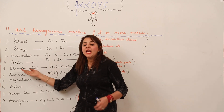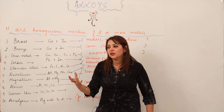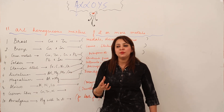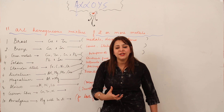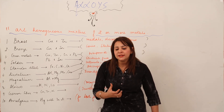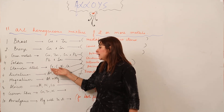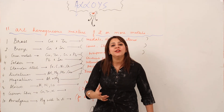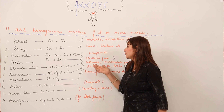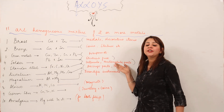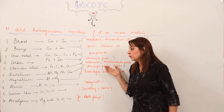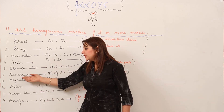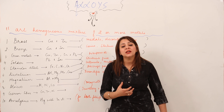Stainless steel is familiar to all of us because most kitchen utensils are made of it. In stainless steel, iron is mixed with carbon along with nickel and chromium. This makes the iron corrosion-free, which is why it is used in making utensils and also in making automobile parts.